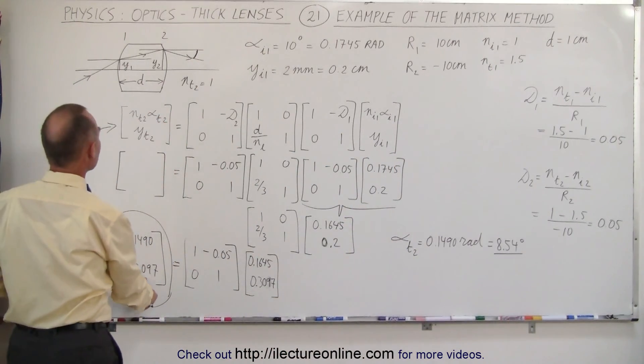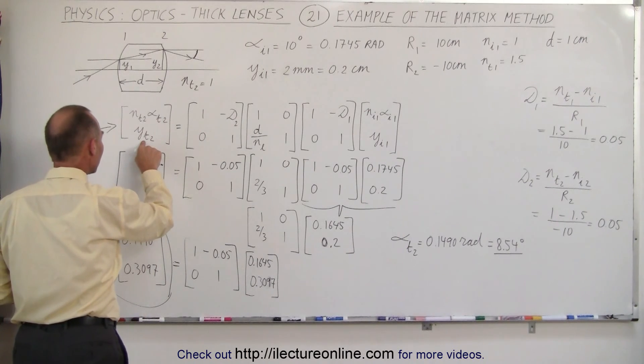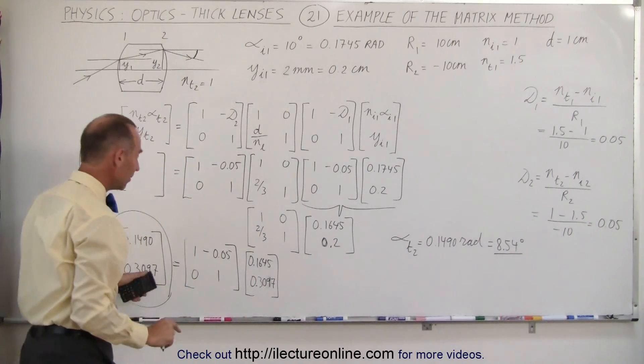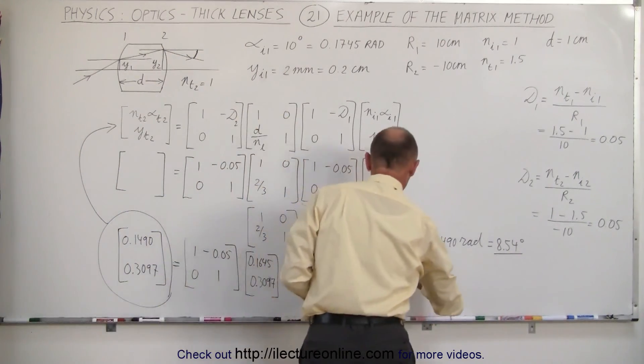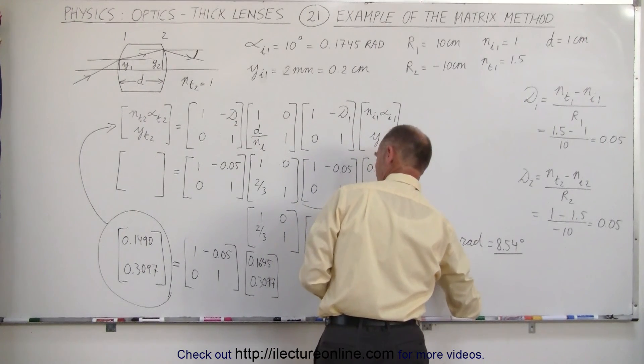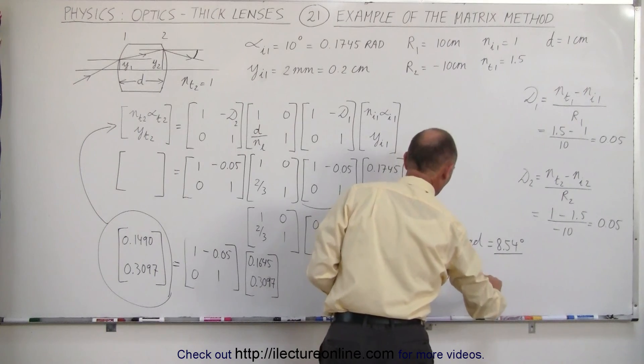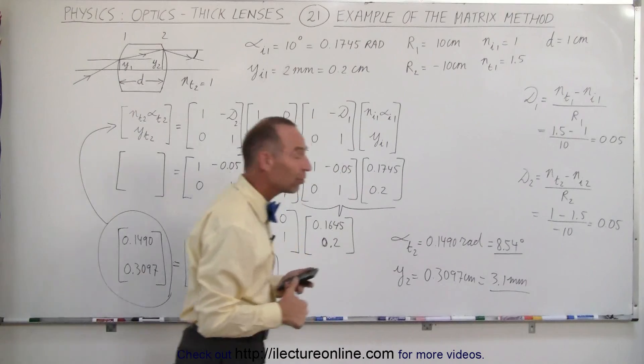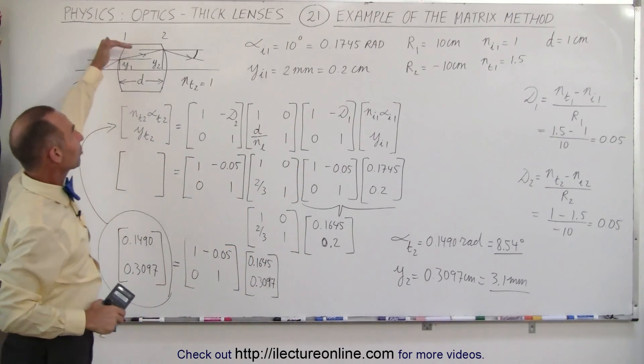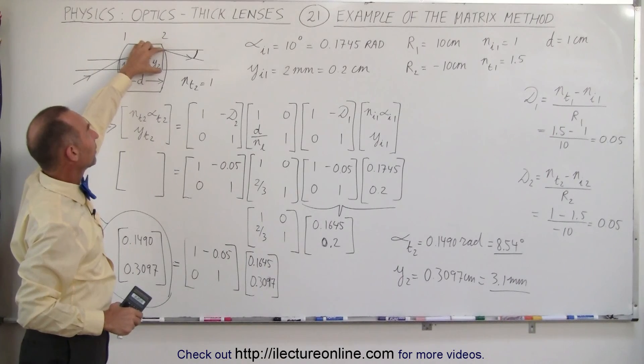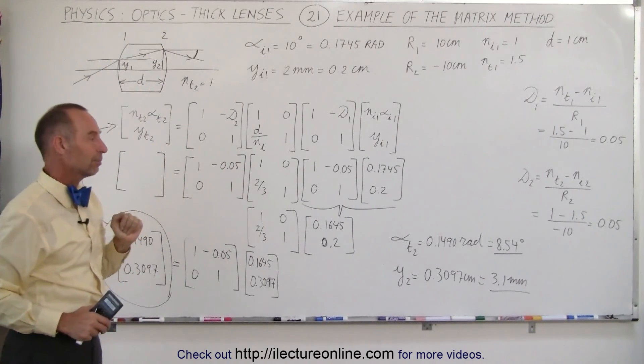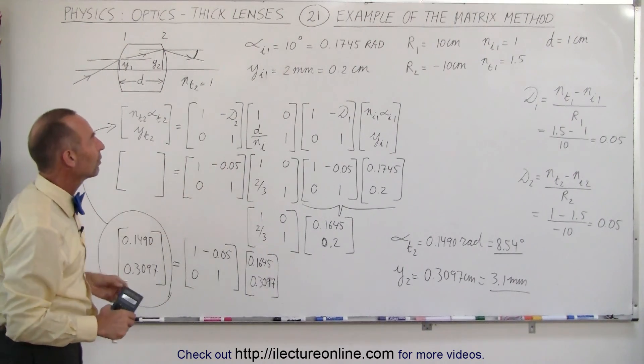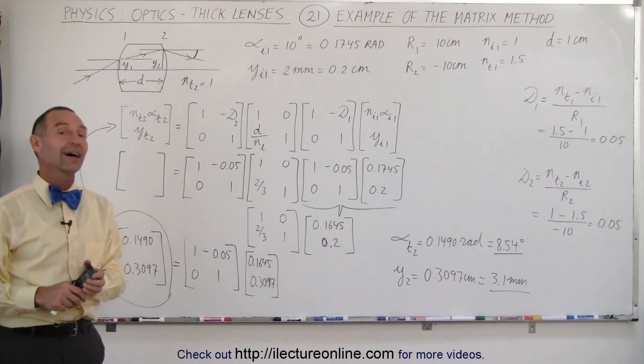The second number is the height above the optical axis, or relative to the optical axis of Y2. So Y2 is equal to 0.3097 centimeters, or approximately 3.1 millimeters. So those are the answers that we're looking for. We know the direction of the ray and the position of the ray relative to the optical axis as it crosses the second boundary, using the transfer matrix as well as the two refractive matrices. And that's how that's done.